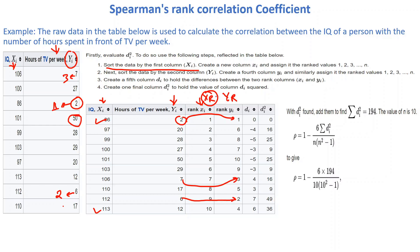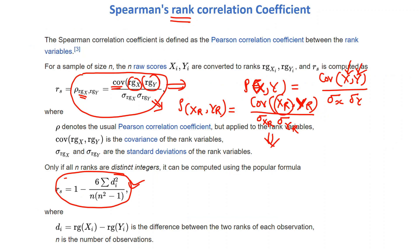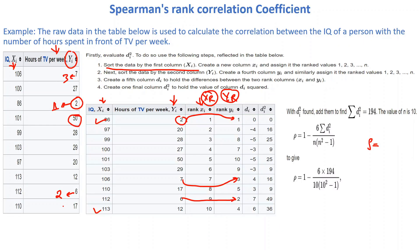Now we have these two values — rank of x (xr) and rank of y (yr). In Pearson we use raw x and y, but in Spearman we use xr and yr. As per the formula, we now calculate the correlation coefficient. We can also use an alternative formula where di means the difference between ranks and n is the total number of data points.